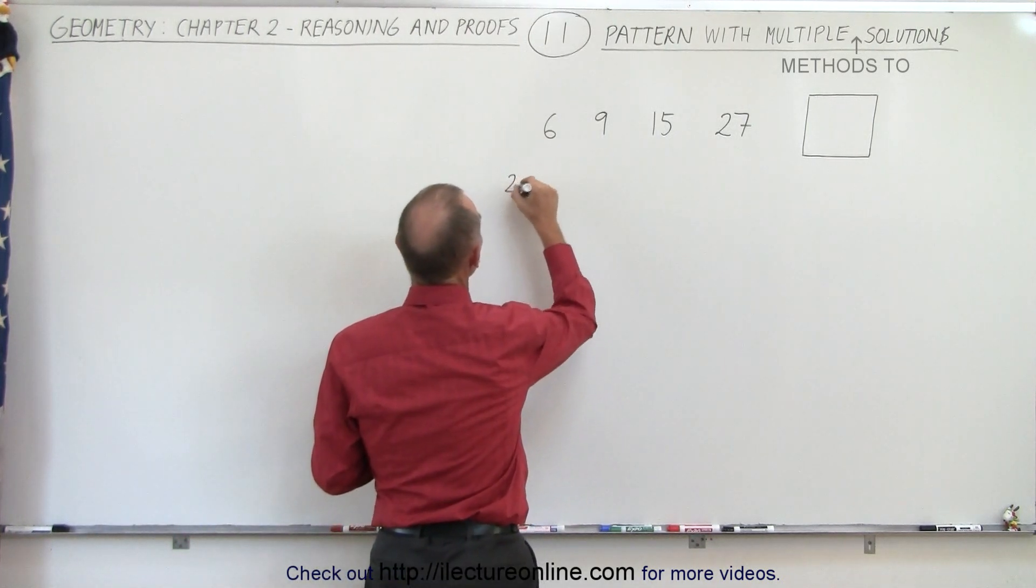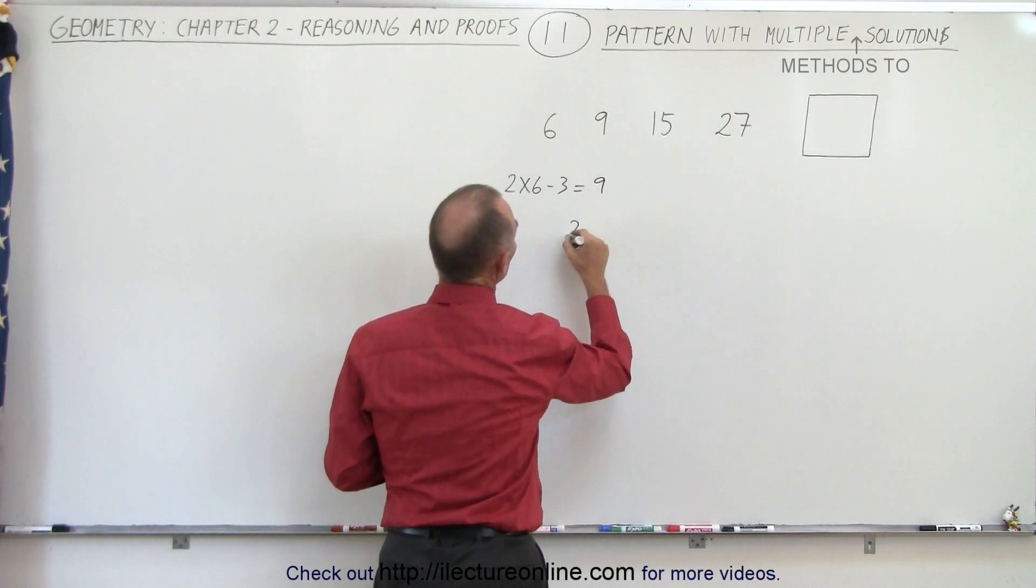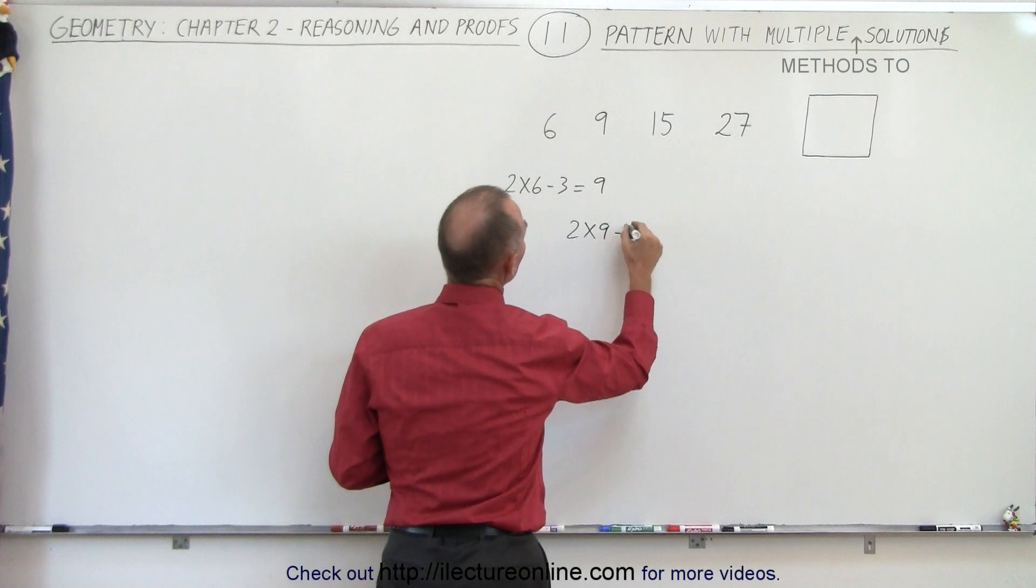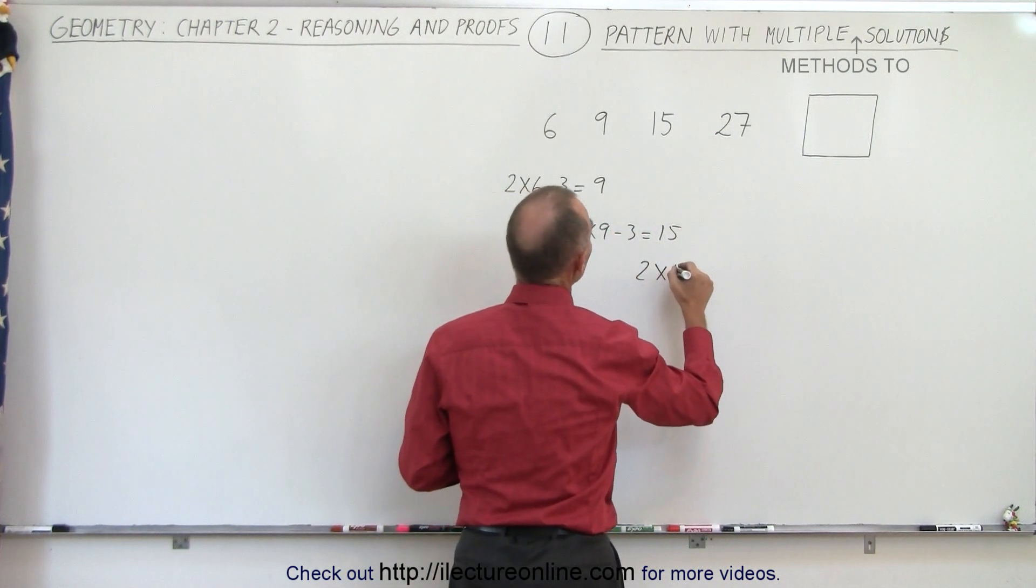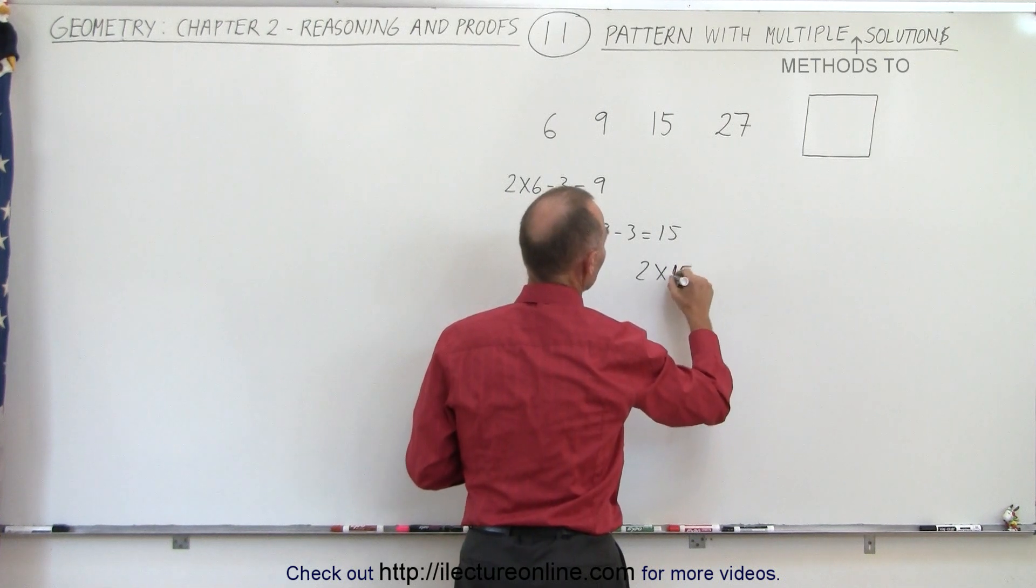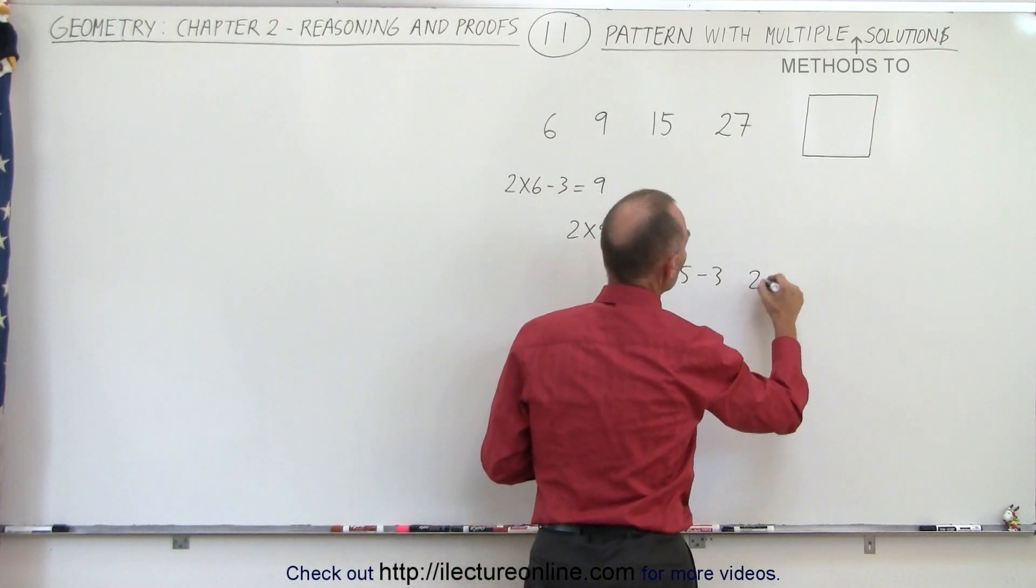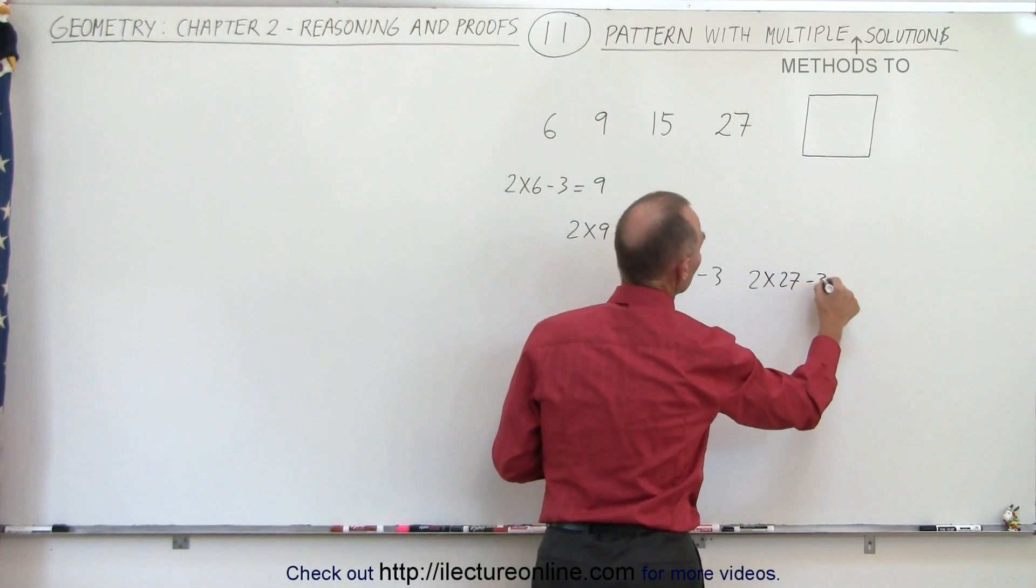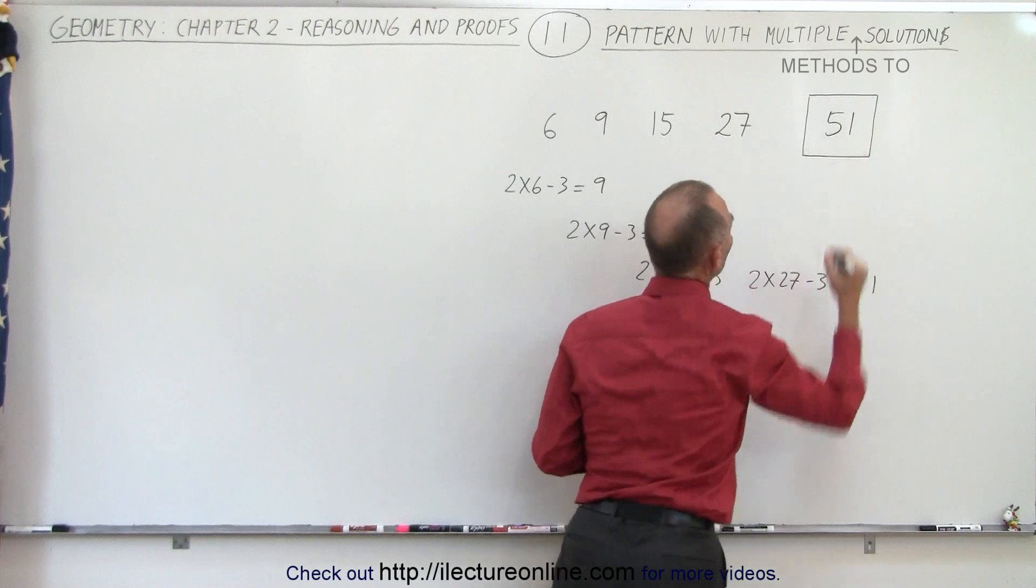So here we can see that 2 times 6 minus 3 equals 9. 2 times 9 minus 3 equals 15. 2 times 15 minus 3 gives me 27. Therefore, 2 times 27 minus 3 equals 51. So I think the number should be 51.